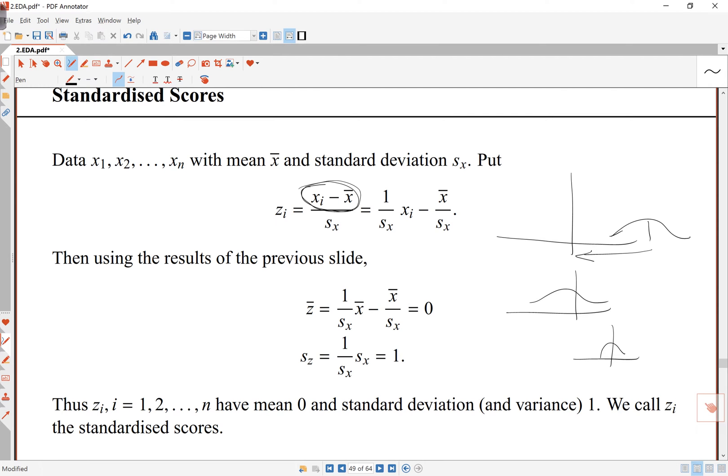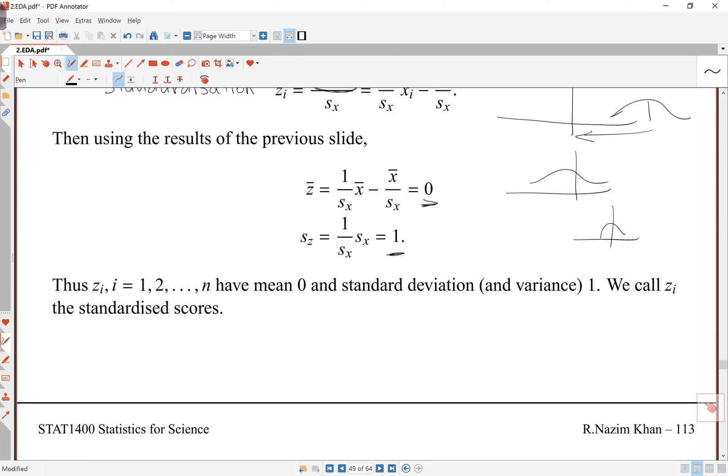So whenever I have this transformation, it's called standardization, where I subtract the mean and then divide by standard deviation. The resulting data will have mean 0, and standard deviation 1. We'll have a look at this again in Qs afterwards.